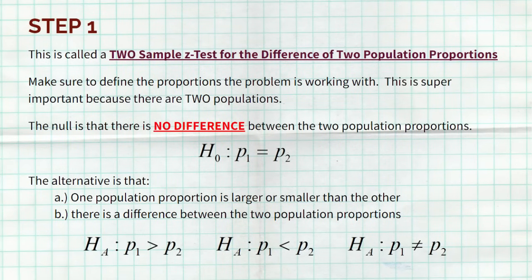We're going to follow the same basic outline of the four steps that we did with a one-sample Z test, but this time we're looking at two samples and focusing on the difference. Let's run through those four steps right now and then finish it off by looking at a full example. Step one is naming the test — this is a two-sample Z test for the difference of two population proportions.